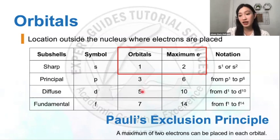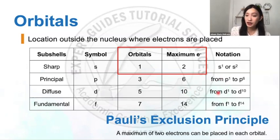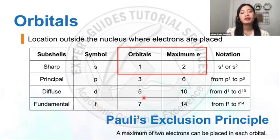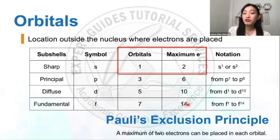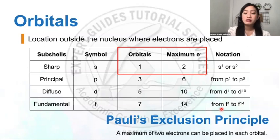Moving on to the D sub-level: it has five orbitals. Five times two provides 10 electrons for the D sub-shell, with notation D1 up to D10. Lastly, for the F sub-level, there is a maximum of seven orbitals, which can hold a total of 14 electrons following Pauli's exclusion principle, so notation F1 to F14.